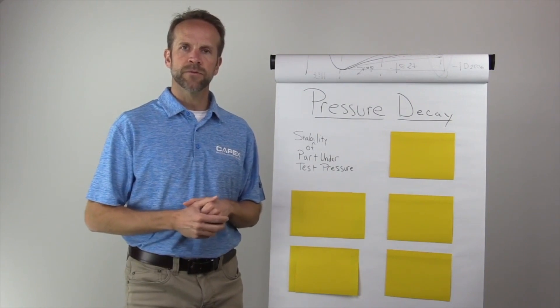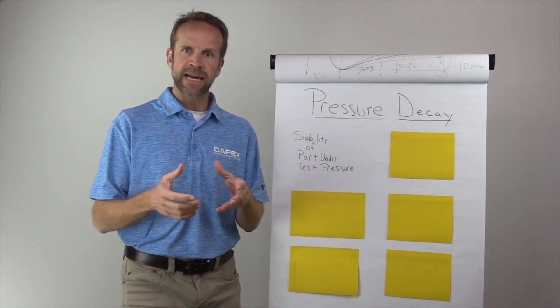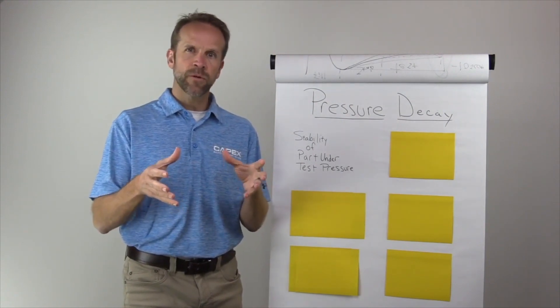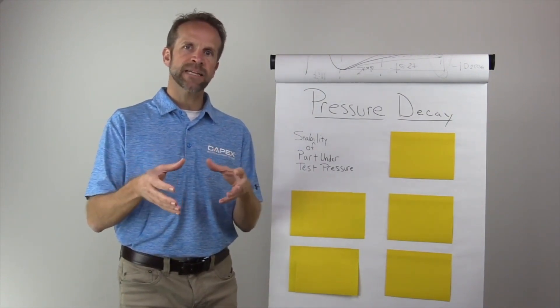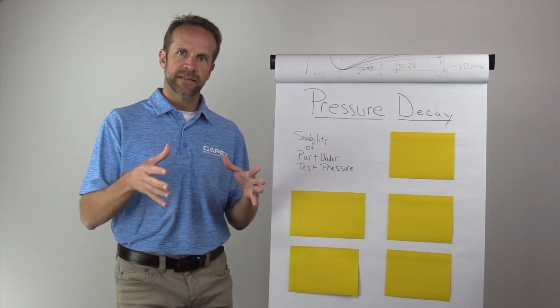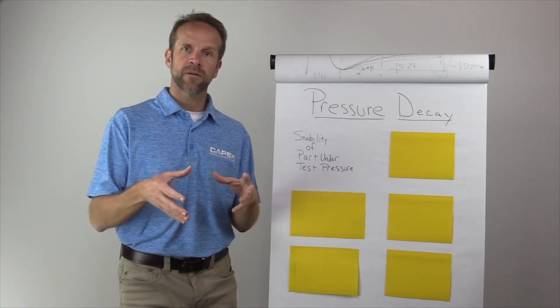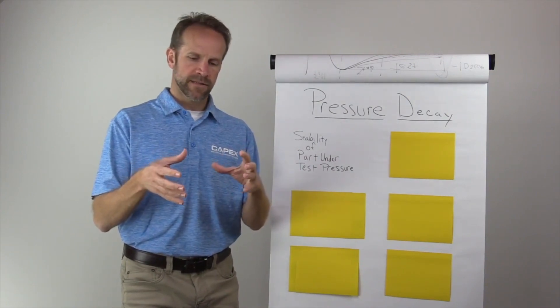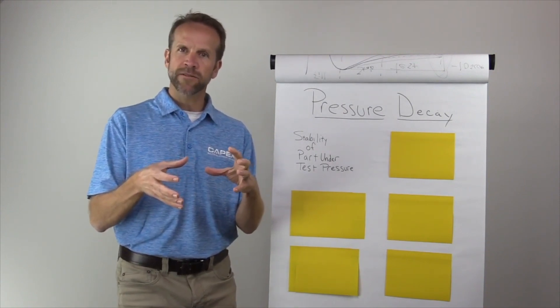The stability of your part under test is something to be considerate of. What that means is if your part is plastic and you pressurize a plastic part, let's say it's a windshield washer bottle, it's going to blow up like a balloon. And when we're using pressure decay, the environment inside the part is extremely critical because that's what we're measuring.